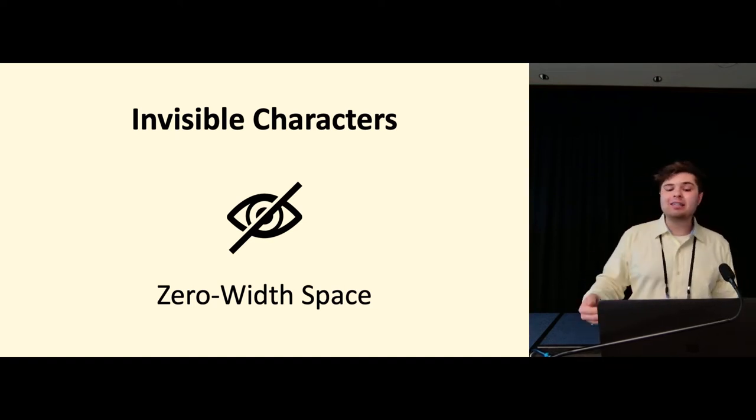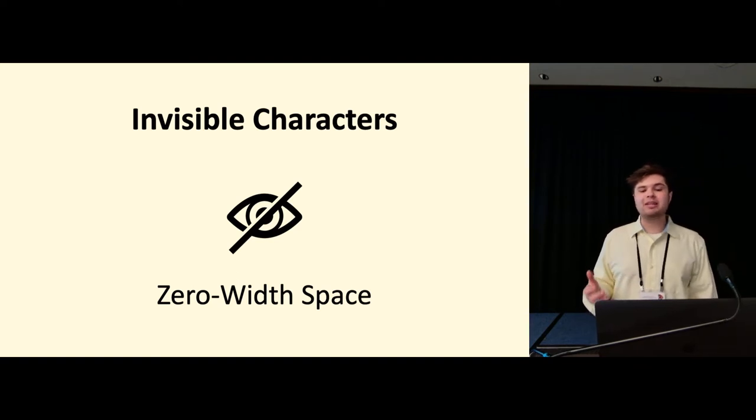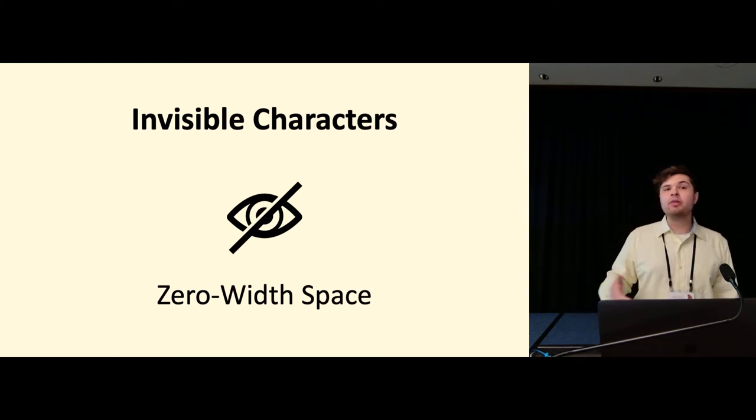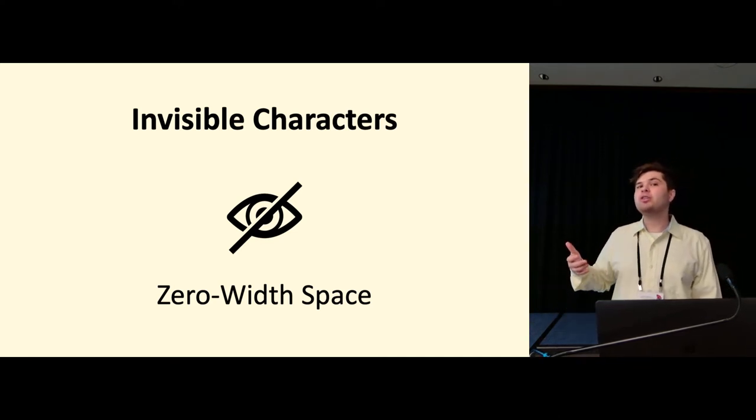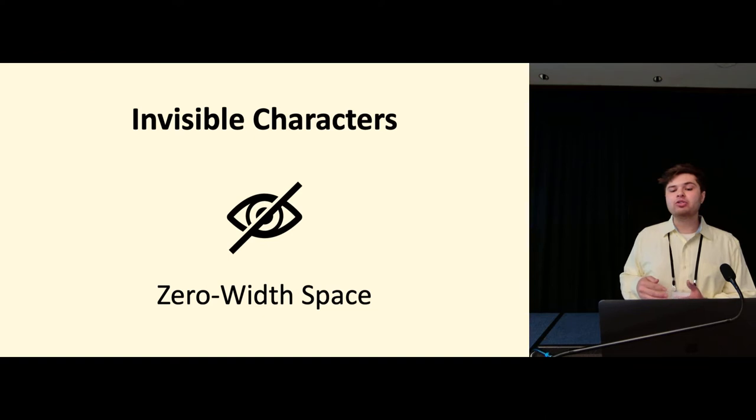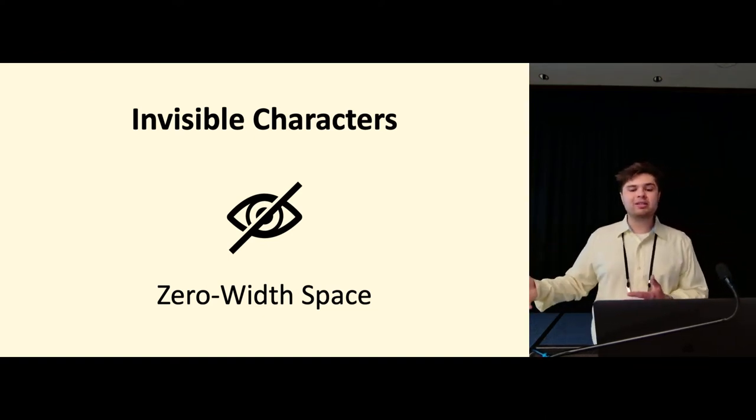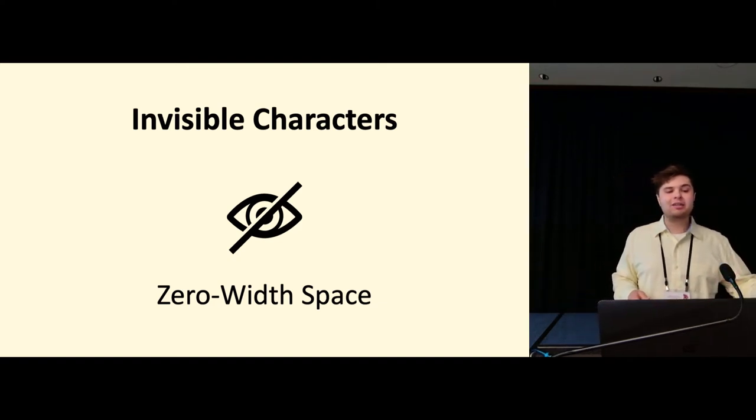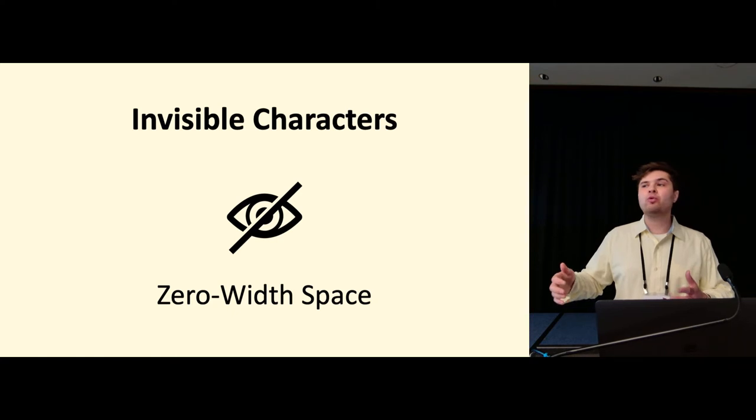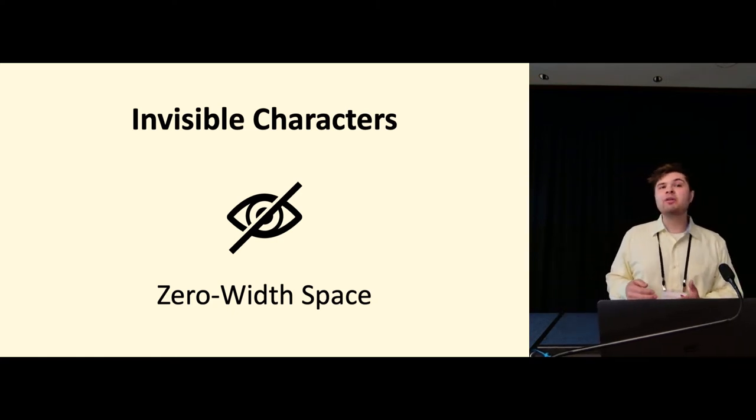And this is really handy because it means that we can inject these arbitrarily into some string, effectively changing the encoding of that string, or the binary representation of that string without changing the way that that string, that text renders. And this is really nice because most NLP models will treat these sort of invisible characters as either unknown tokens in their embedding space, or some kind of dedicated zero-width space token, for example. But both of those different avenues will result in some change to the embedding space for whatever model we're discussing, which means that we're very likely going to have some impact on the output of that model.